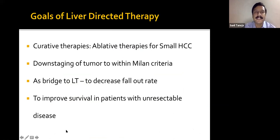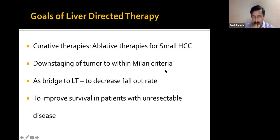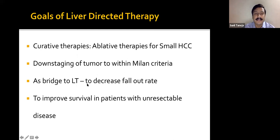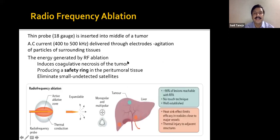The goals of liver-directed therapies are: curative intent (30-40% achievable in early-stage tumors); downstaging tumors to within Milan criteria for transplantation; bridge to liver transplantation to decrease fallout rate when waiting period exceeds six months; and improving survival in unresectable patients. Survival with current therapies is quite good.